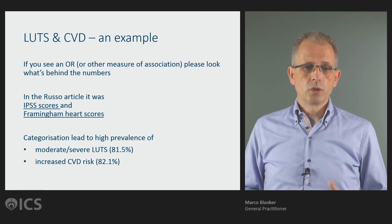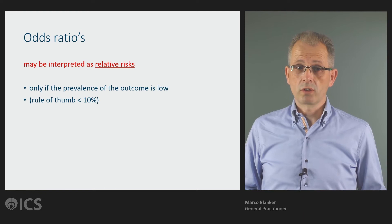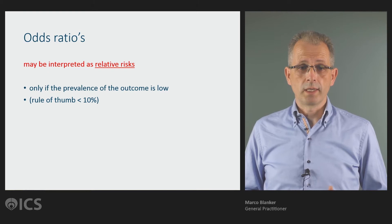This categorization led to a high prevalence of both moderate to severe lower urinary tract symptoms and a high prevalence of increased cardiovascular disease risk. And there comes the problem, because odds ratios may be interpreted as relative risks only if the prevalence of the outcome is low — and as a rule of thumb we use less than 10%.